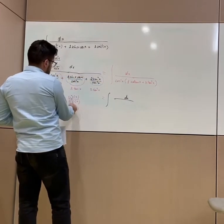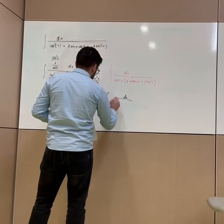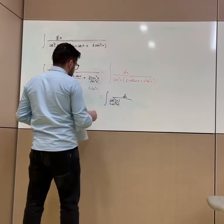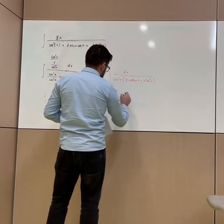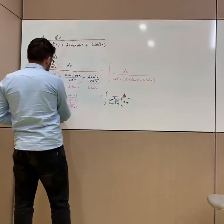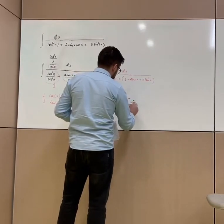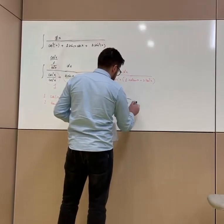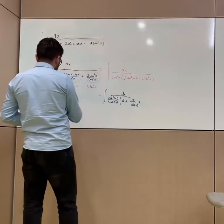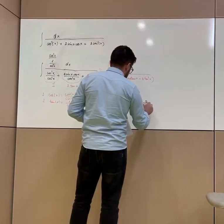Cosine squared x will be cotangent squared x over cosecant squared x. Then 2 tangent x, since tangent x equals 1 over cotangent x, will become 2 over cotangent x, plus 2 over cotangent squared x.